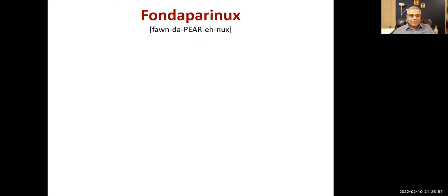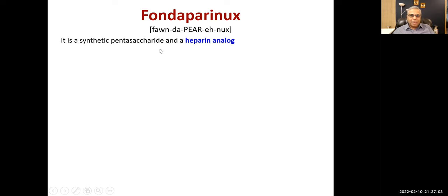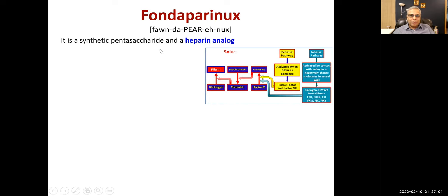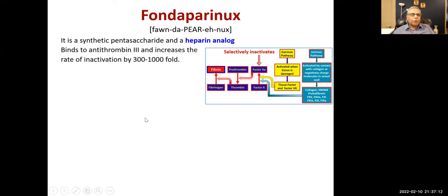Now we go to fondaparinux, which is an analog of heparin. It is a synthetic pentasaccharide heparin analog. It selectively inactivates factor Xa, blocking the conversion of prothrombin to thrombin. It binds to antithrombin and increases the rate of factor Xa inactivation 300 to 1000-fold — the same basic mechanism as heparin.